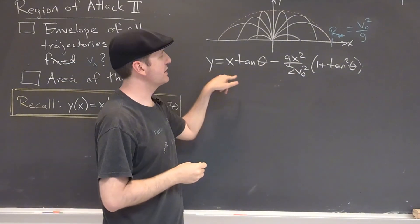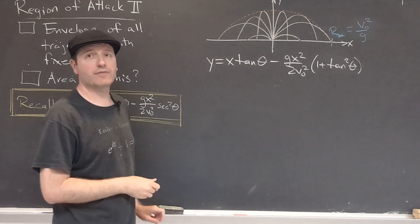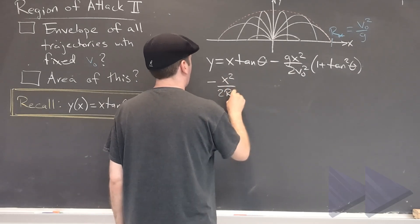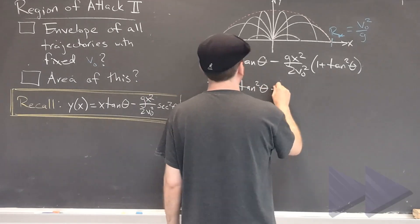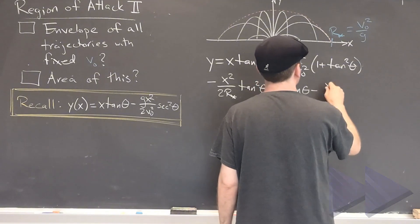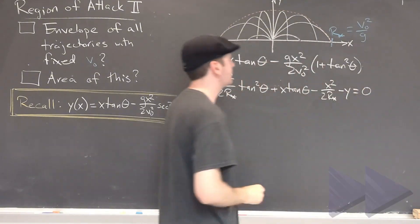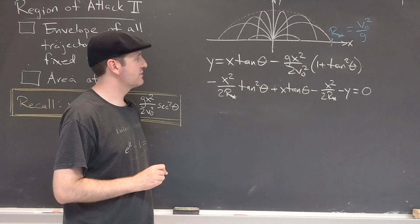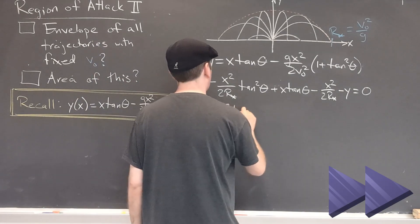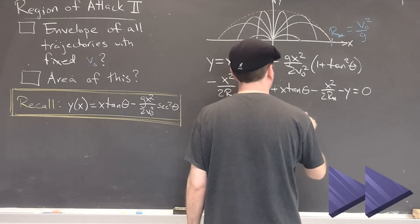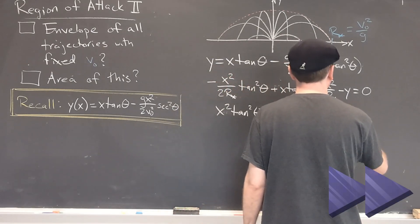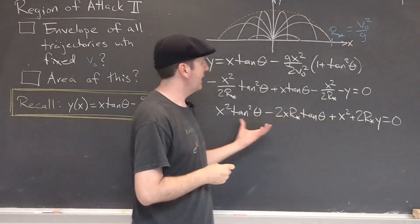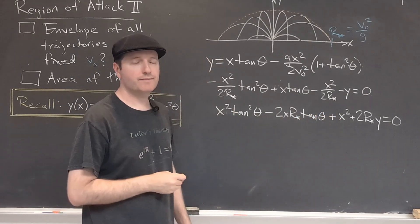We've already kind of worked out what that maximum range is. It occurs when theta is a 45 degree launch angle, and its value is V0 squared over G. I'm going to rewrite this a little bit in terms of this R star, just to make the notation a little bit cleaner. Now let's go ahead and rewrite this in terms of a quadratic formula involving tan theta. Okay, let's go ahead and multiply this whole thing by 2R star and get rid of this negative sign, just to make things look a little bit prettier. And now we can see that we have a quadratic equation in terms of theta, or tan theta.